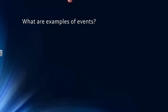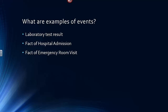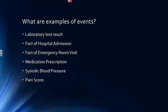What are examples of events? A laboratory test result is an example. The fact of a hospital admission is an event. The fact of an emergency room visit is an event. Each of these events can have attributes that further specify what they are: an emergency room visit for an asthma case, a hospital admission for congestive heart failure, a laboratory test of hematocrit or hemoglobin. Additional events include a medication prescription, the measurement of a systolic blood pressure, a reported pain score by a patient, or a cardiac echo study. All these events define the patient, and the sequence of those events defines a patient.